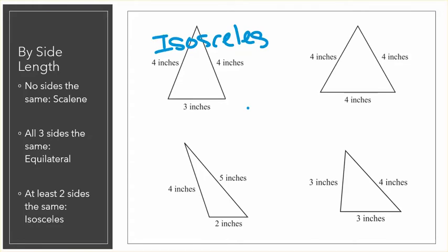Let's check out the second one. In the second triangle, all three sides are labeled as four inches. This is a triangle with three equal sides. It's equilateral.